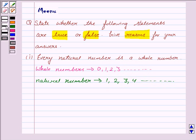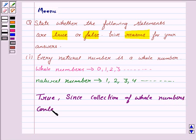Hence, the given statement is true. That is, every natural number is a whole number since the collection of whole numbers contains all natural numbers. So this completes the first part.